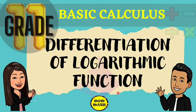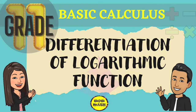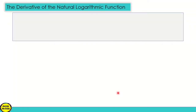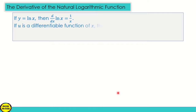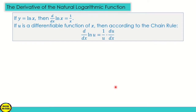Hello, in this video lesson we will discuss the differentiation of logarithmic functions. The derivative of the natural logarithm function: if y is equal to ln x, then d/dx of ln x is equal to 1 over x. If u is a differentiable function of x, then according to the chain rule, d/dx of ln u is equal to 1 over u times du over dx.